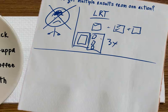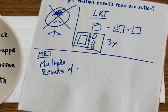Now I want to talk about multiple results tasking, which is where you get multiple results with fewer actions. Here's one way to think about it.